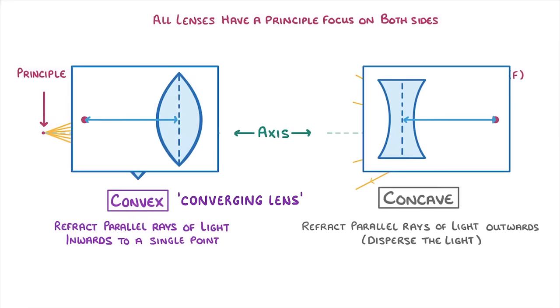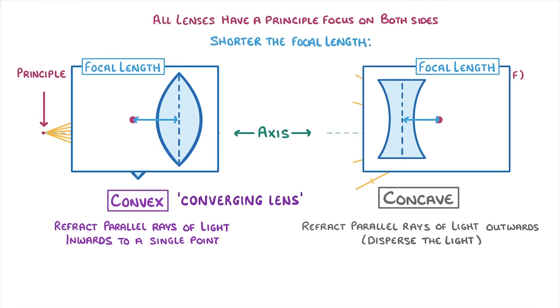The distance between the principal focus and the very centre of the lens is called the focal length. And the shorter the focal length is, the more powerful the lens will be, which just means that it will refract light more strongly.